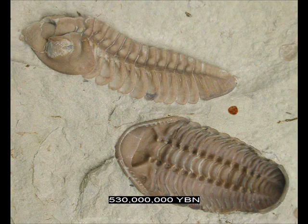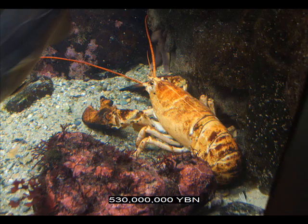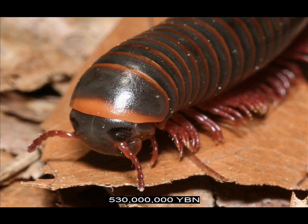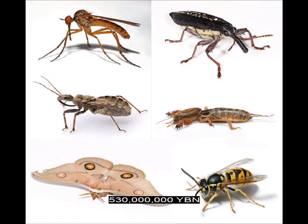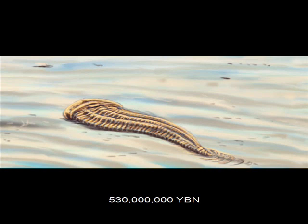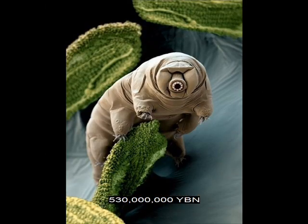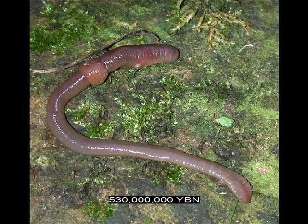Arthropods include the trilobites, the crustaceans (shrimps, crabs, and lobsters), the myriapoda (centipedes and millipedes), the chelicerata (arachnids and horseshoe crabs), and the insects. All arthropods have a segmented body covered by an exoskeleton containing chitin, which serves as both armor and as a surface for muscle attachment. Ecdysozoa onychophorans evolve — a transition between worms and arthropods, having segmented worm-like bodies but with appendages like arthropods. Ecdysozoa tardigrades. Trochozoa annelids — segmented worms.